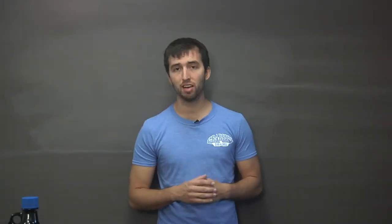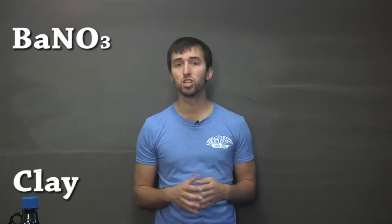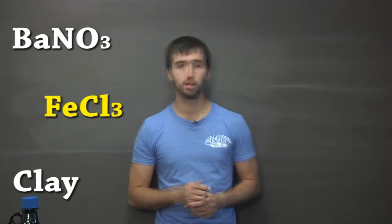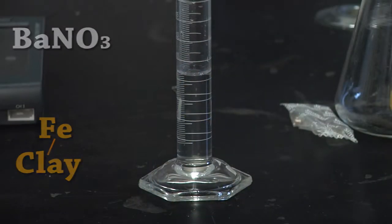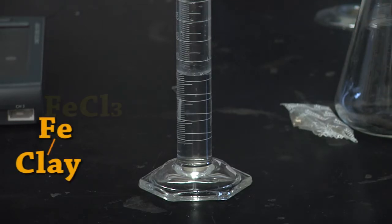Now all we should have left in solution is barium nitrate and clay. To help remove the clay, we will use iron chloride. The iron molecules will help remove the clay from solution. We are going to use approximately one milliliter of iron chloride to precipitate our clay. The positively charged iron molecules will react with the negatively charged clay to help remove it from solution.